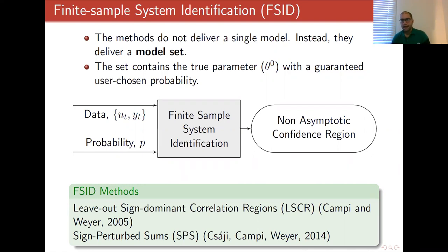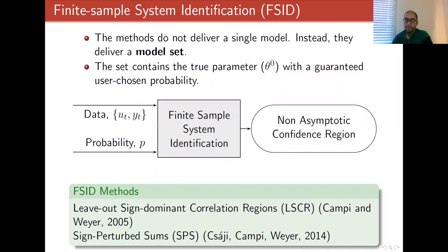The method takes data and a probability p as input — for example 0.9 — and gives a confidence region. That confidence region has two important properties. First, it is non-asymptotic: it includes the true parameter with the user-chosen probability even for a finite number of data points — for example, it's true for even 20 data points — and this result holds under minimal distributional assumptions. Second, the confidence region shrinks around the true parameter as the number of data points goes to infinity. Two of these methods are Leave-Out Sign-Dominant Correlation Regions (LSCR) and Sign Perturbed Sums (SPS). Today I want to focus on the newest one, SPS.